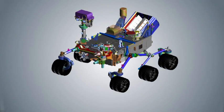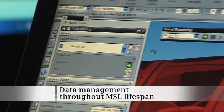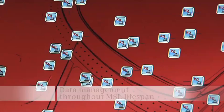JPL engineers used Siemens PLM software to help design and test the parts before assembling the system.